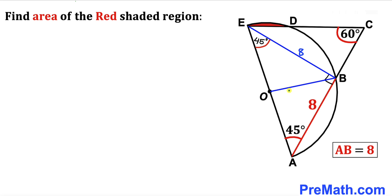In the next step, I've connected center O with point B. We can observe that OB, OE, and OA are all radii of the semicircle. Let me label this radius as lowercase r. Since EB equals AB, we conclude that angle EOB is 90 degrees.